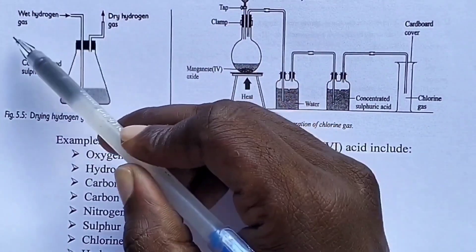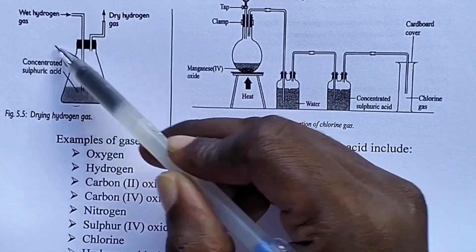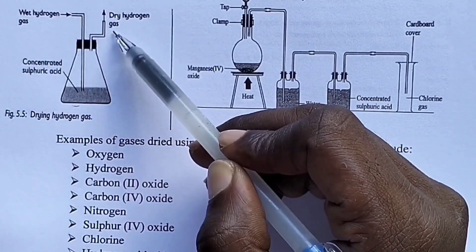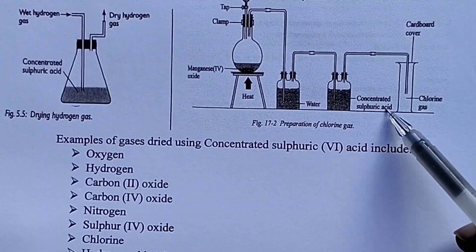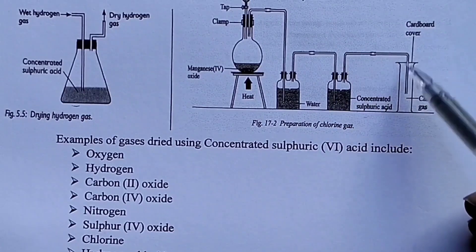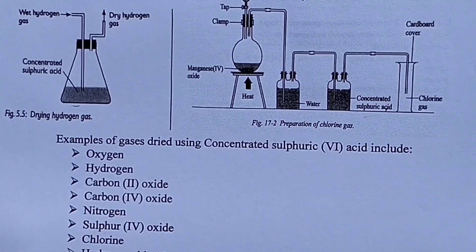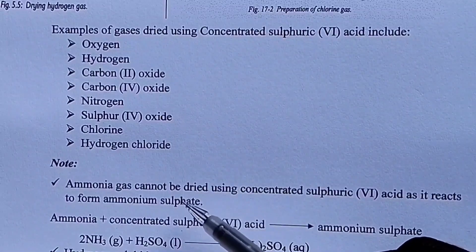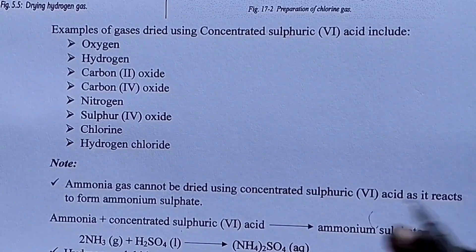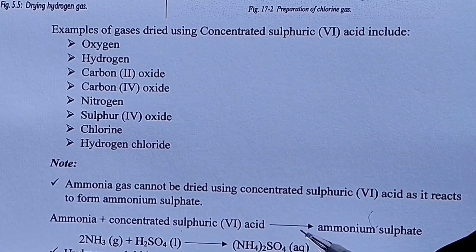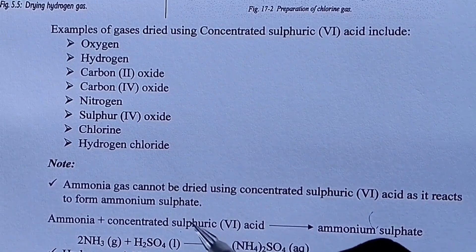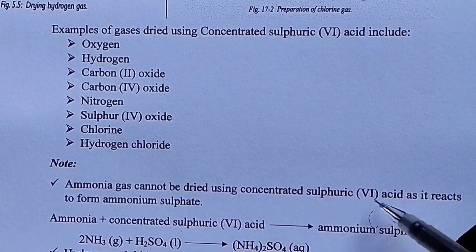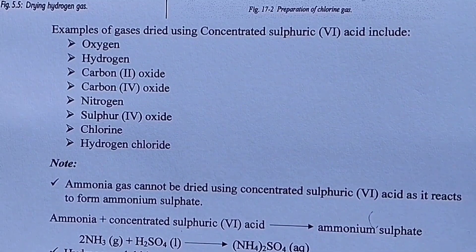If we have wet hydrogen gas and the gas is bubbled through concentrated sulfuric acid, which acts as the drying agent, we will obtain dry hydrogen gas. Note: ammonia gas cannot be dried using concentrated sulfuric acid because the two react to form ammonium sulfate. The equation is: ammonia gas plus concentrated sulfuric acid gives ammonium sulfate. The balanced chemical equation is: 2NH₃ + H₂SO₄ → (NH₄)₂SO₄.